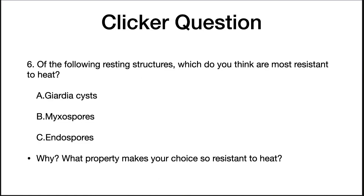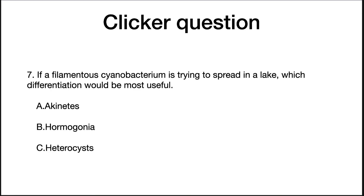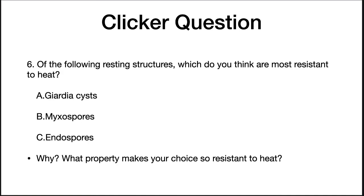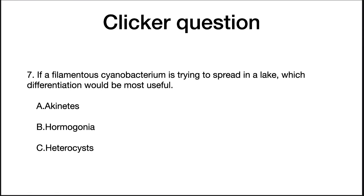Of the following resting structures, which do you think are most resistant to heat? And if a filamentous cyanobacterium is trying to spread in a lake, which differentiation would be most useful? The answer to the first question is of course endospores — what property makes them so resistant to heat? It's the dehydration of the endospore cytoplasm. A filamentous cyanobacterium spreads through hormogonia, the motile small filaments that can break off from a colony and start a new one.